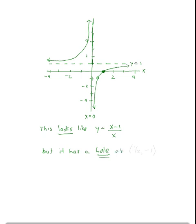It happened where the x-value was 1/2, the y-value was negative 1. And so, we have now our complete sketch of the graph.